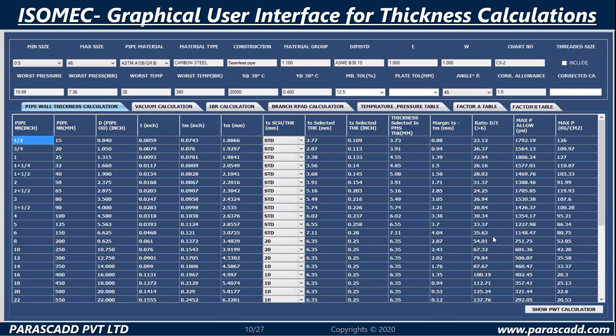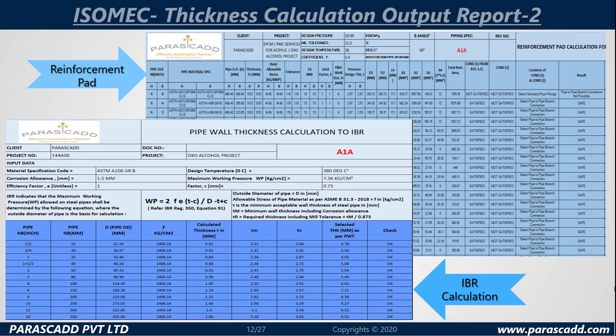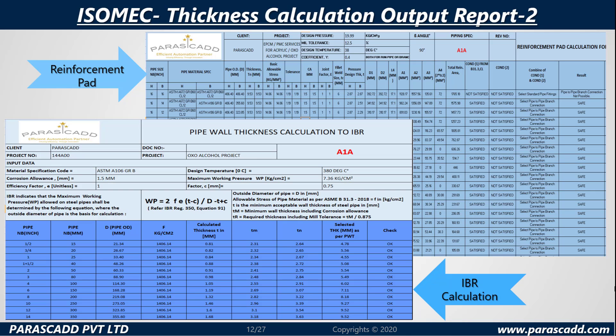The GUI also includes the factor A table and factor B table. For the Isomec thickness calculation output reports, you can view the internal pressure and external pressure results, as well as the reinforcement pad and the IBR calculation.